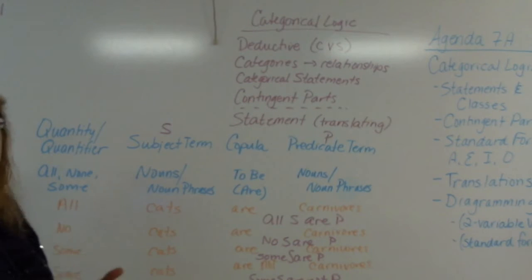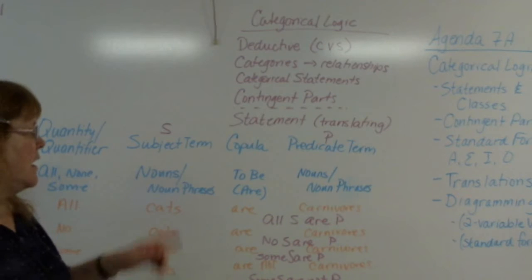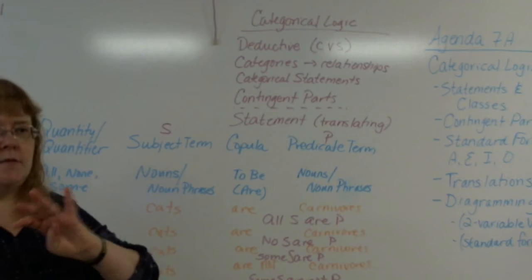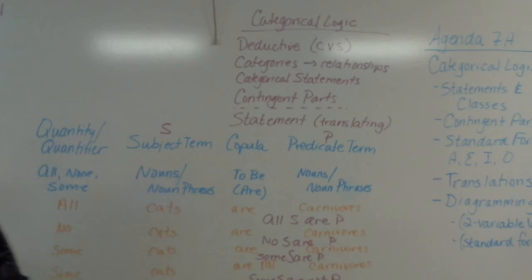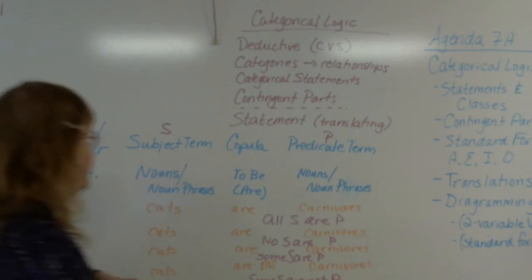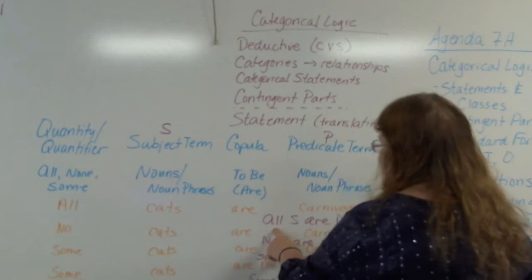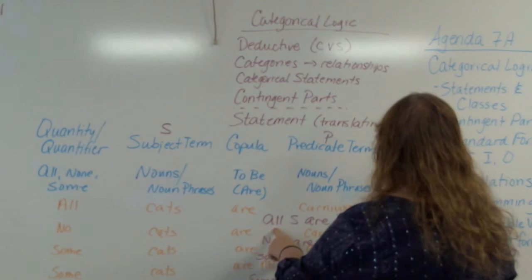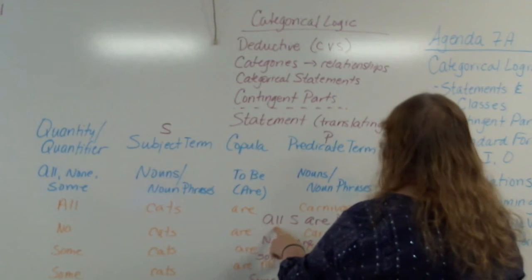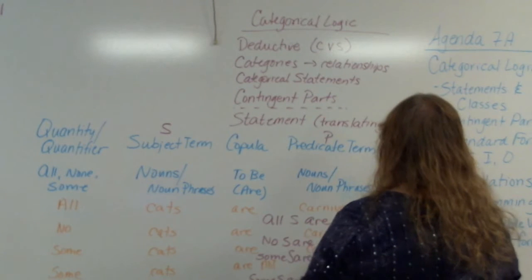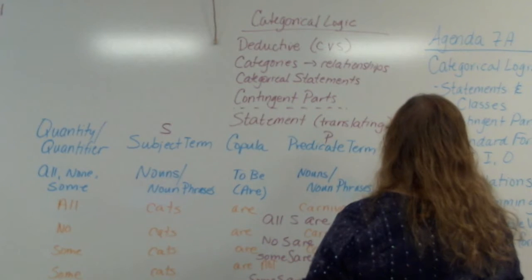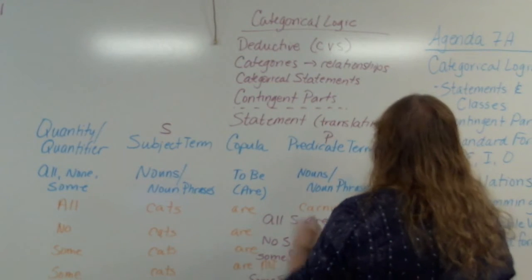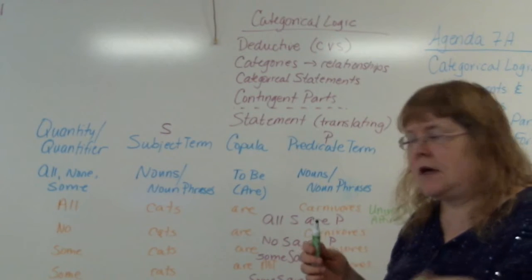These four forms also have names — and we have our A, E, I, O labels. Looking at 'all S are P': this is a universal because it's an 'all,' and it's affirmative — that's just a yes. This is the letter A, our alpha, the first one.